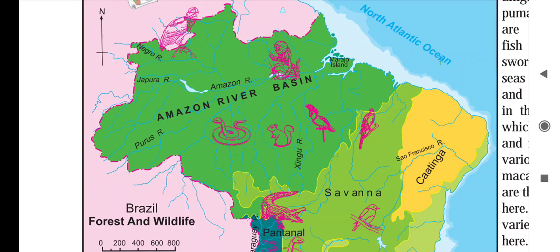In the Amazon River Basin, the bird condor, which is a huge bird that flies high in the sky, is found. The golden lion tamarin is also shown. Various types of snakes, rabbits, and other birds are also given in the picture.